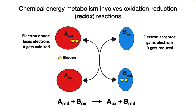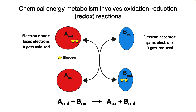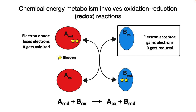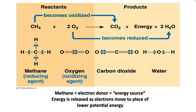Chemical energy metabolism involves oxidation-reduction, or redox reactions. Every atom and every molecule has electrons in it, and depending on the nature of the atoms and molecules, they will have a tendency to donate or accept electrons. Every redox reaction has a donor, A, that gets oxidized, and an acceptor, B, that gets reduced. Electrons move from the donor to the recipient. For example, in the burning of methane, methane is the electron donor and energy source — it donates its electrons to oxygen, creating carbon dioxide and water, and releases heat.